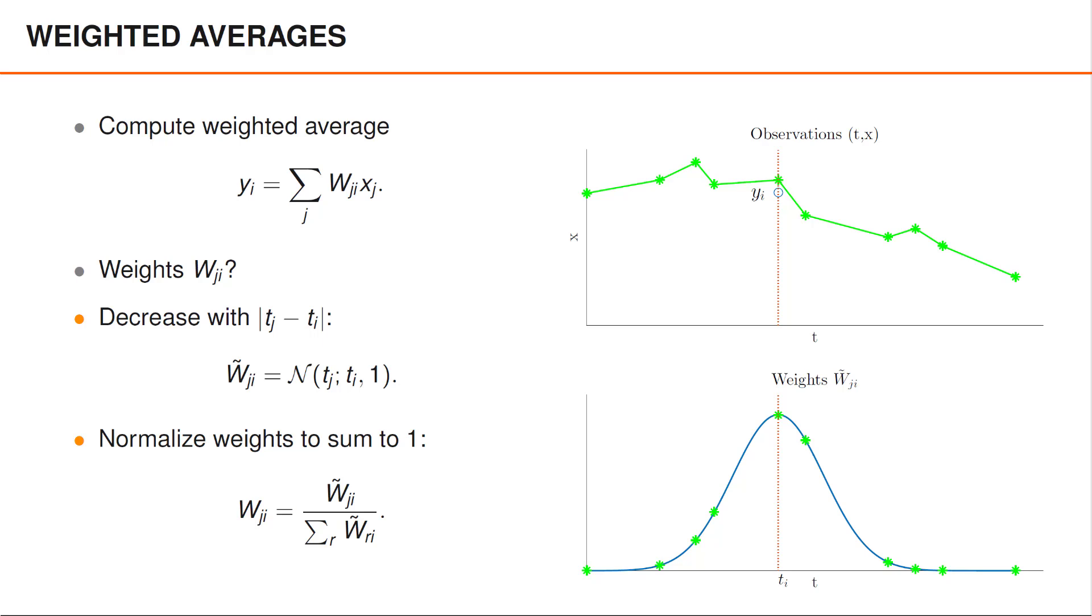A technical detail here is that capital W has two indices, j and i, where the second index i specifies the data point for which we are computing a weighted average. In the bottom figure, i is therefore fixed for all the green stars.